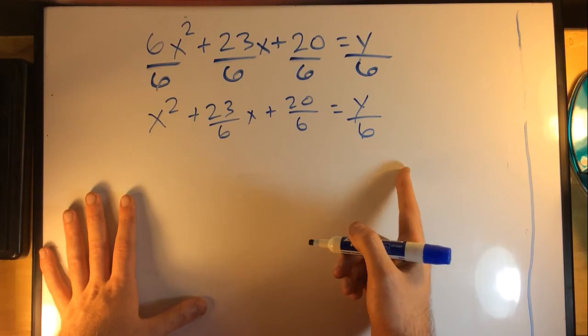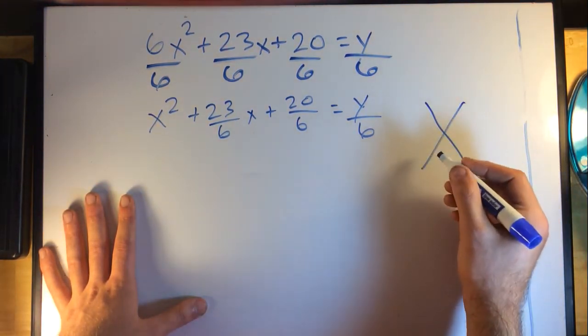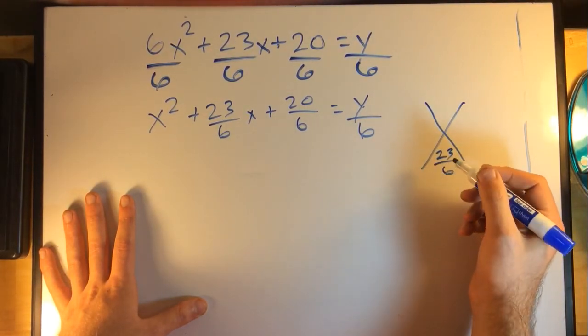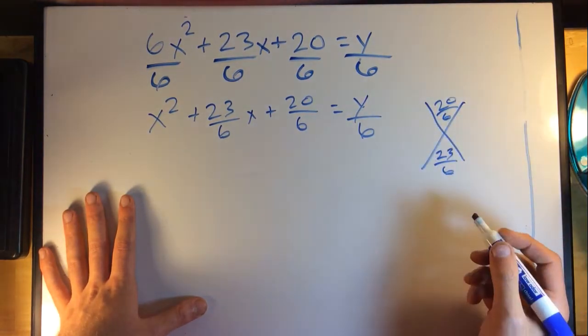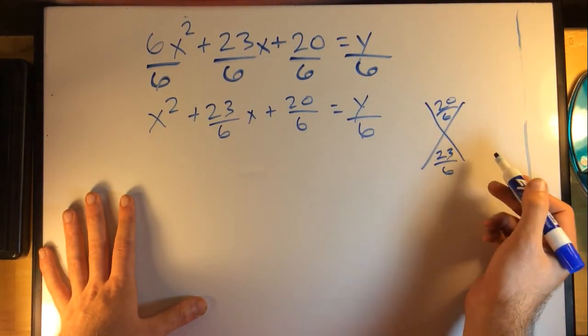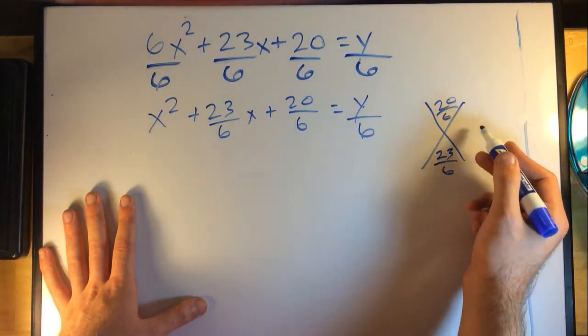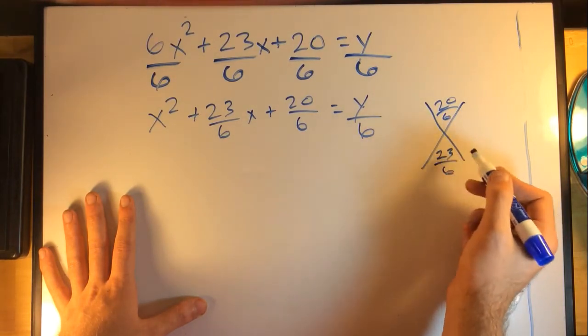I'm going to do my diamond again. Now in the bottom I'm going to have my middle term, 23/6, and the top I'm going to have 20/6. Then remember I'm just going to find two terms that multiply to equal my top and add up to equal my bottom.